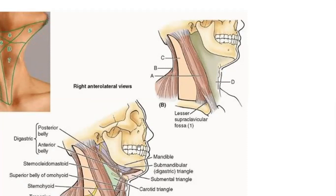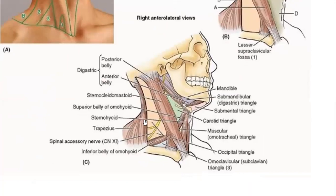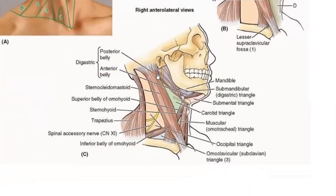About the manubrium sternocleidomastoid. You can just see in a more elaborate form — this is the posterior border of the sternocleidomastoid, and its anterior border forms the posterior boundary of the anterior triangle of the neck. And anteriorly is the anterior median line. You can see the mandible base. The apex is at the jugular notch. So these are the main boundaries of the anterior triangle.